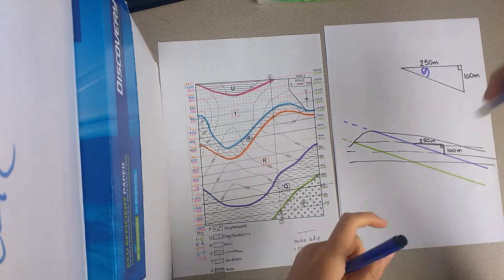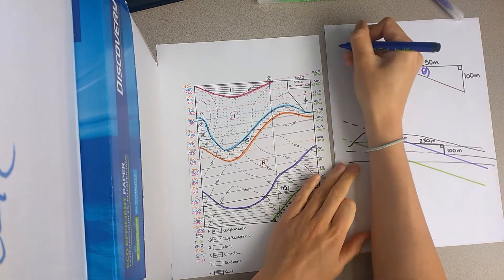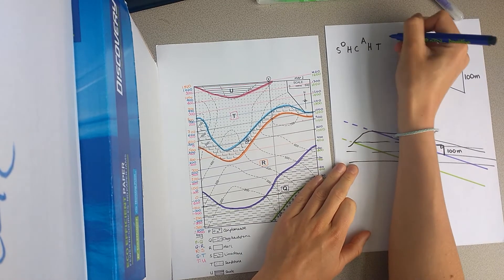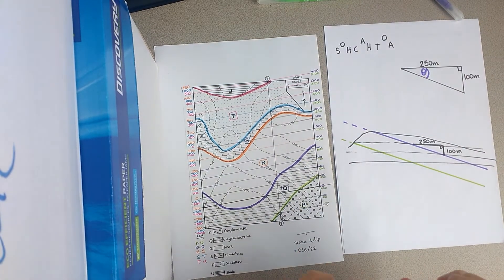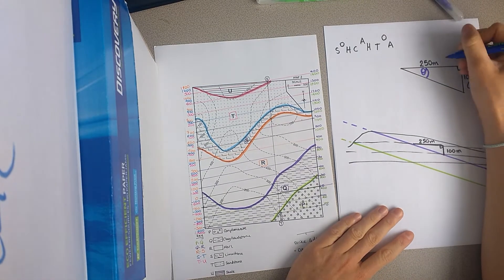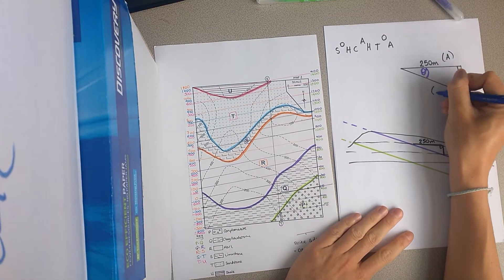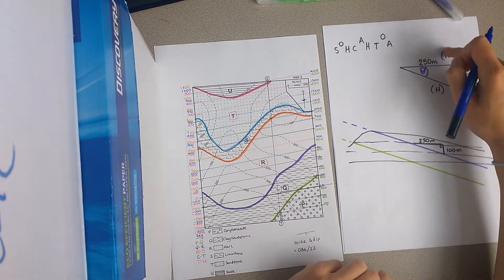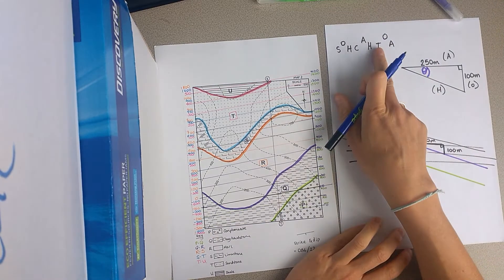So, if you remember your trigonometry, okay? So here, this would be the opposite, this would be the adjacent, and this would be the hypotenuse. So, because we have the opposite and the adjacent, we're going to use tan.